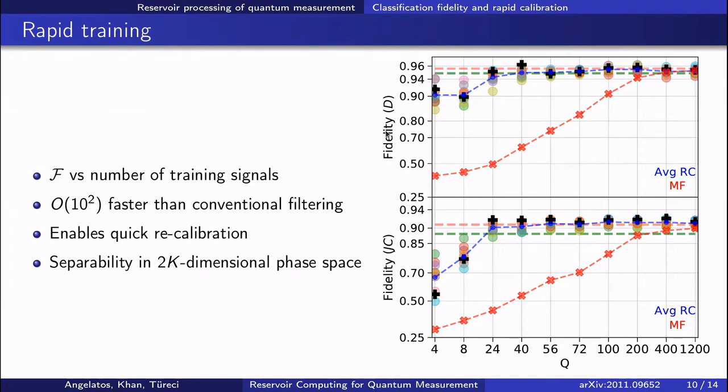This difference is important because quantum experiments, and in particular quantum computers, need to be recalibrated regularly. This can be accomplished with far less time and hopefully less quantum resources using an RC-based measurement chain. This advantage is a result of the ease of separating states in the 2k-dimensional reservoir phase space, which we can understand better by looking at the reservoir dynamics directly.